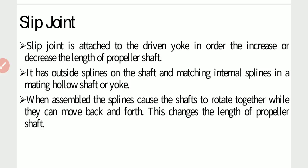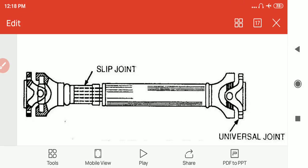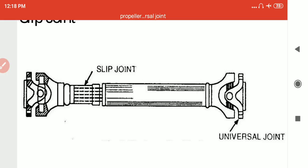A slip joint is attached to the driven yoke in order to increase or decrease the length of the propeller shaft. It has outside splines on the shaft and matching internal splines in the hollow shaft or yoke. When assembled, the splines cause the shaft to rotate together while they can move back and forth, changing the length of the propeller shaft. This is the diagram of a slip joint. Here our lecture ends.